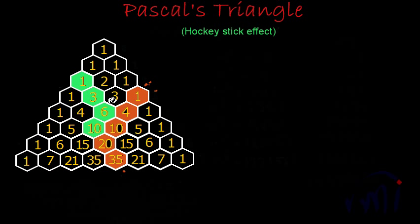So this is the hockey stick effect. You have to remember that the stick should always start from the first or the last element of the row. And the second thing to remember is about the bend — the stick should always bend towards the starting point. If you are starting from the right hand side, the bend should be towards the right side. If you are starting from the left hand side, the bend should be towards the left side. In the next video, we are going to learn about the Fibonacci series — how do we find the Fibonacci series in Pascal's Triangle. That's a little tricky, so bye-bye till then.